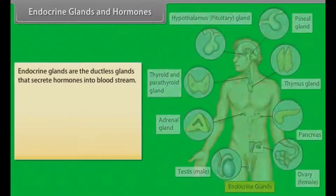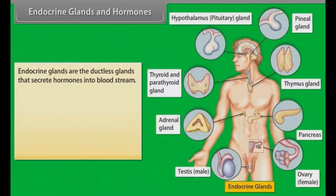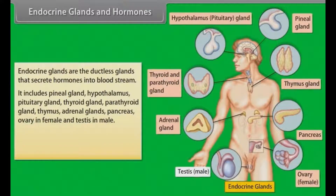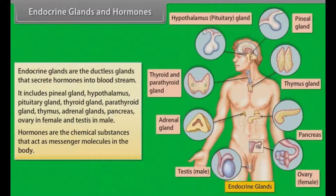Endocrine glands are the ductless glands that secrete hormones into the bloodstream. They include the pineal gland, hypothalamus, pituitary gland, thyroid gland, parathyroid gland, thymus, adrenal glands, pancreas, ovary in females, and testis in males. Hormones are the chemical substances that act as messenger molecules in the body.